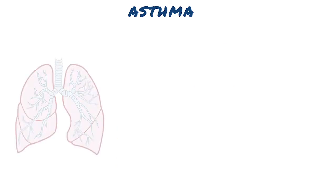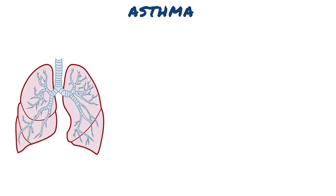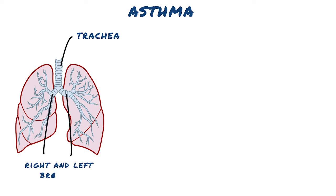Let's briefly review the lung anatomy before moving on to asthma's pathophysiology. The trachea, bronchi, and bronchioles form the tracheobronchial tree, a system of airways that allow passage of air into the lungs where gas exchange occurs. The trachea marks the beginning of the tracheobronchial tree. At the level of the sternal angle, the trachea bifurcates into the right and left main bronchi, which undergo further branching to produce the secondary bronchi. The segmental bronchi undergo further branching to form numerous smaller airways — the bronchioles.